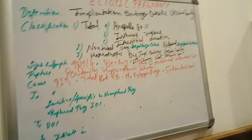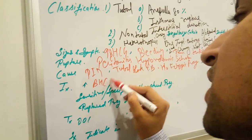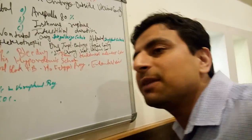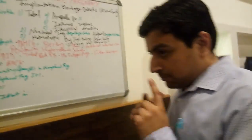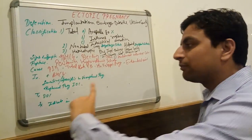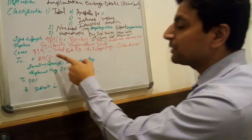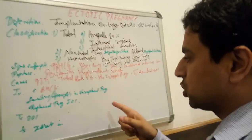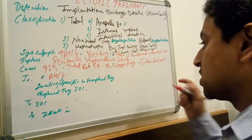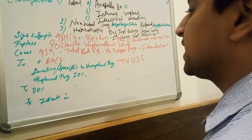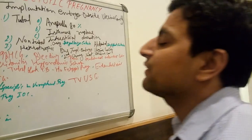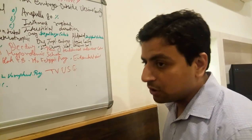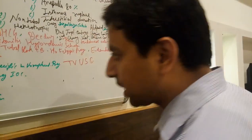For investigations: we check the increasing level of beta-hCG. If someone has unilateral lower abdominal pain, we think about ectopic pregnancy and check beta-hCG. The most sensitive and specific investigation of choice for unruptured ectopic pregnancy is transvaginal ultrasonography (TVUSG). This has been asked in past MCQs in exams like AIIMS and others.